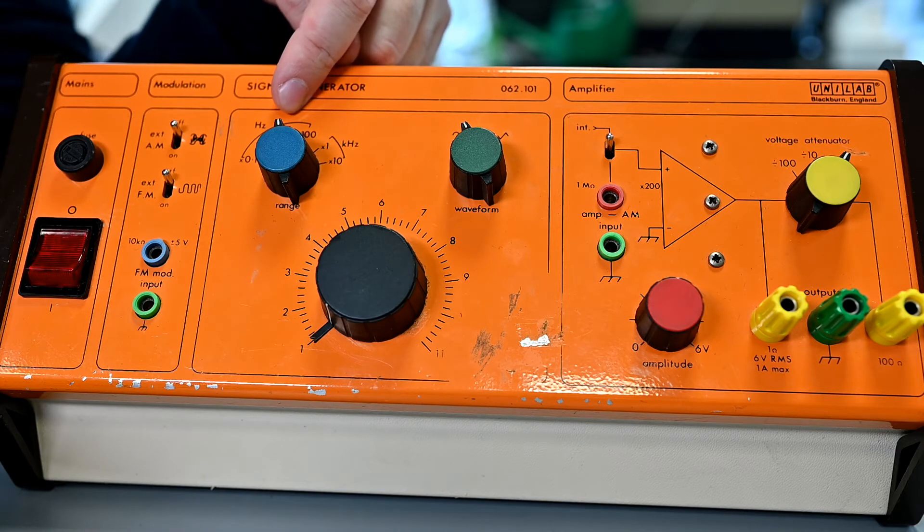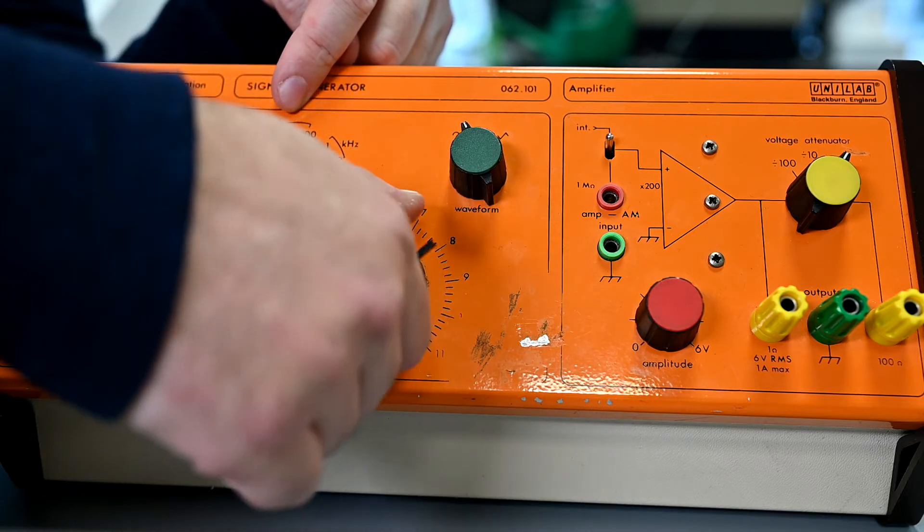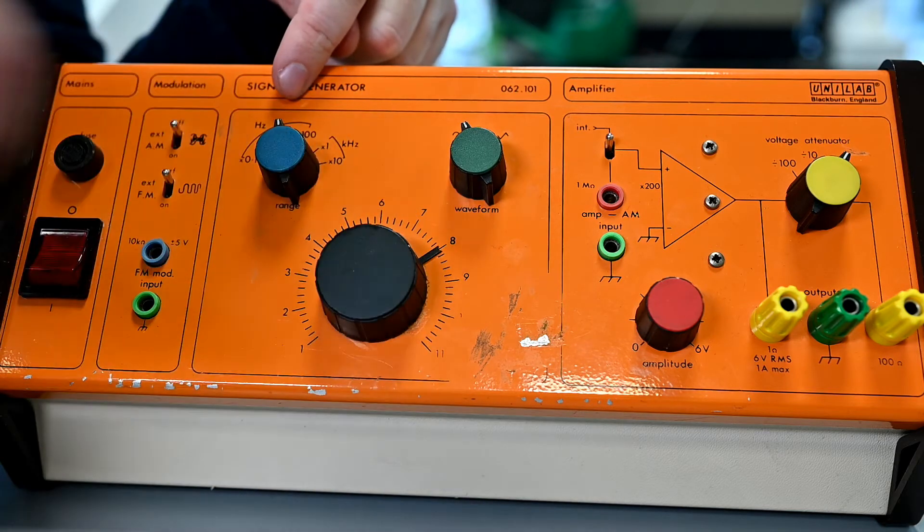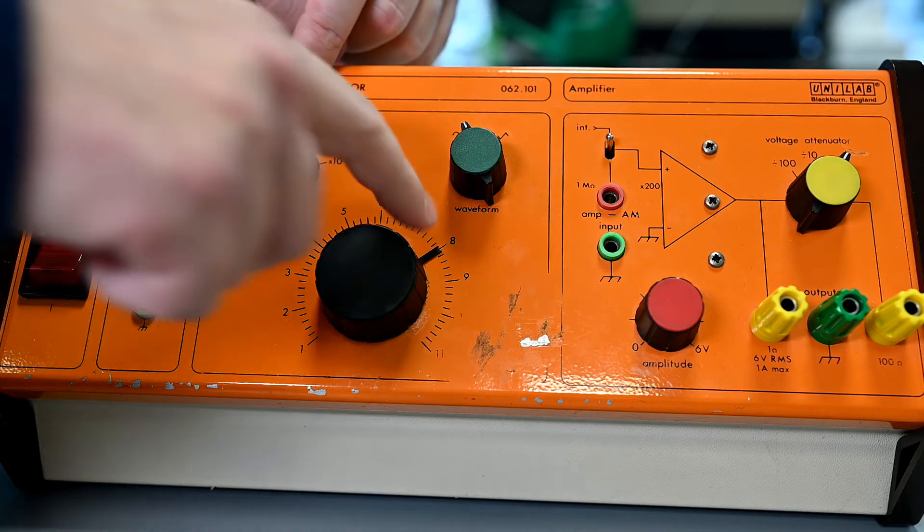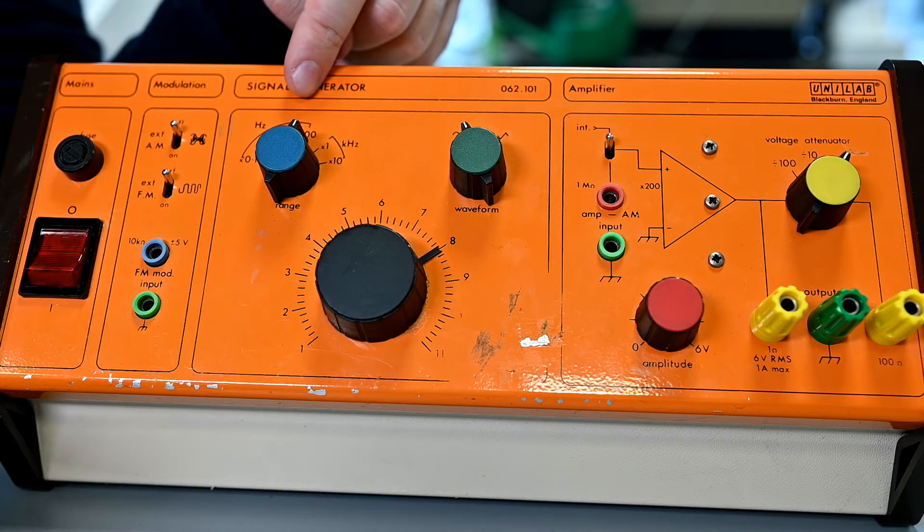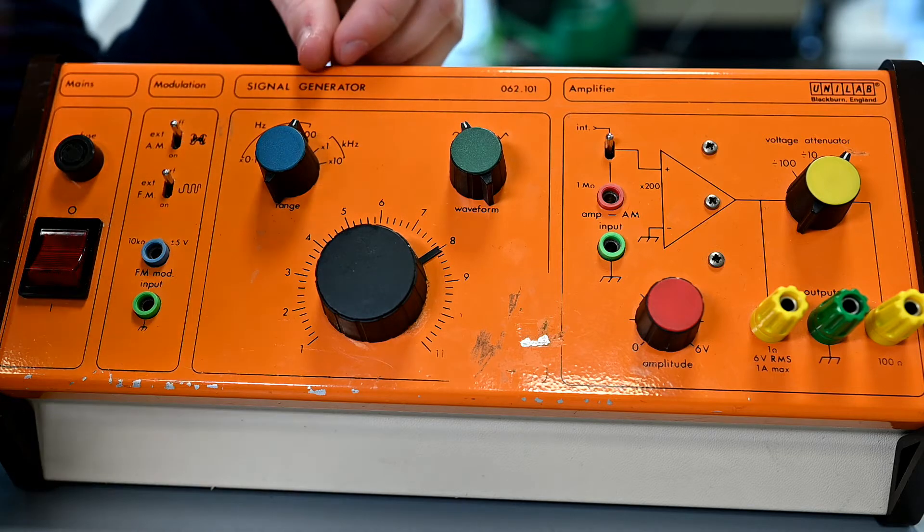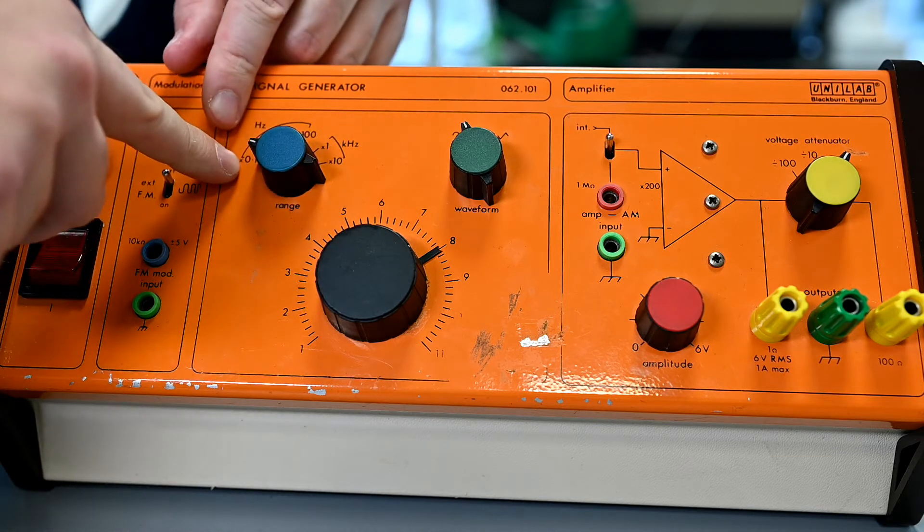And that goes up, so if I moved it there for example, that would now be 80. If I change the scale to times 100, that would now mean 800. These signal generators tend to go between about 0.1 and about 10 kilohertz.